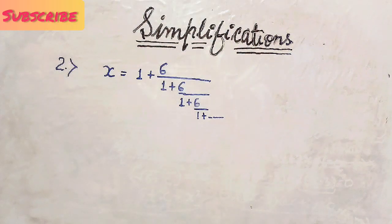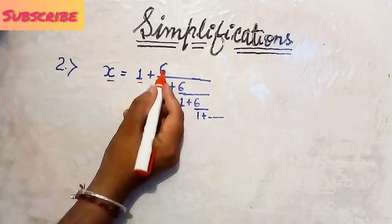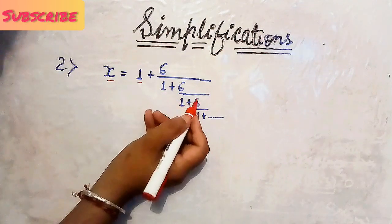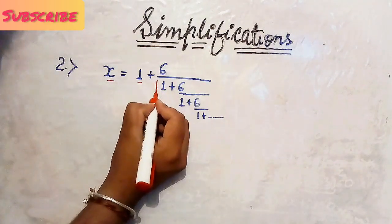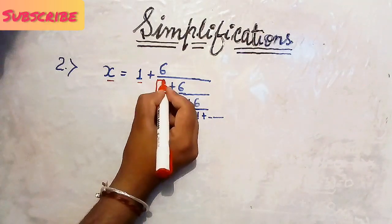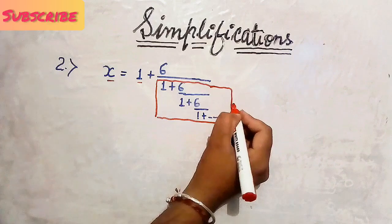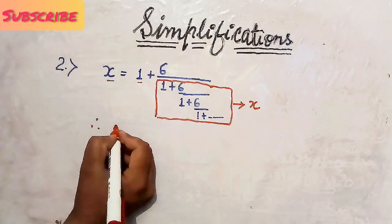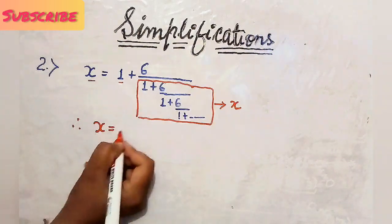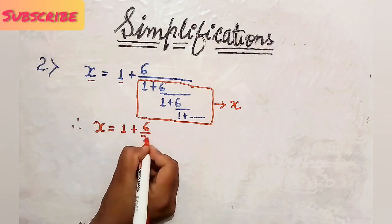Now let us see the second amazing problem: X equals 1 plus 6 upon 1 plus 6 upon 1 plus 6 upon 1 plus 6, and so on. This is also an endless process. If I leave the first part, the remaining part will be the same as X again. So let us replace it — X equals 1 plus 6 upon X.